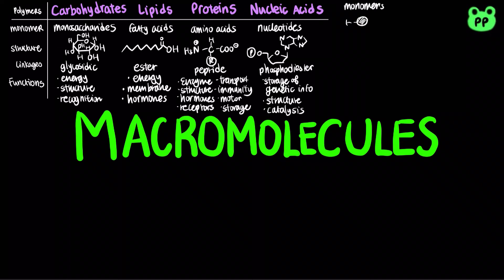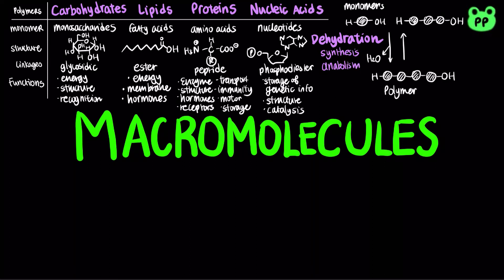A dehydration or condensation reaction removes a water molecule, forming a new bond between a monomer and a short polymer, leading to the synthesis of a longer polymer. This is known as anabolism, or constructing molecules from smaller units. Polymers are disassembled to monomers by hydrolysis, which adds a water molecule to break a bond. This is known as catabolism, a pathway that breaks down molecules into smaller units.